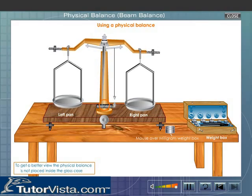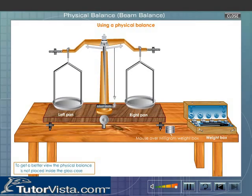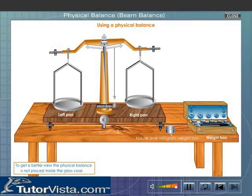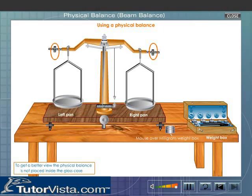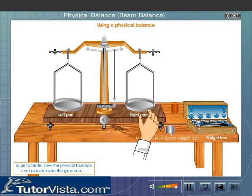However, if the pointer swings more in one direction, then adjust the balancing screws such that it swings equally on either side of the zero mark. Lower the central rod and place the article to be weighed in the left hand side pan.